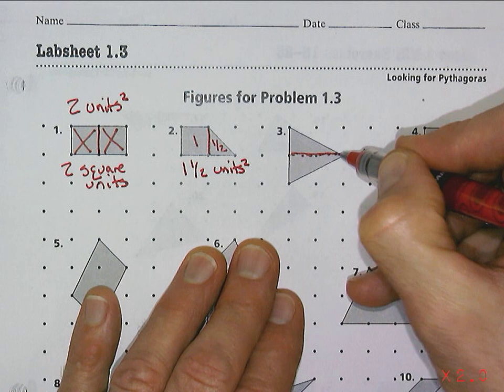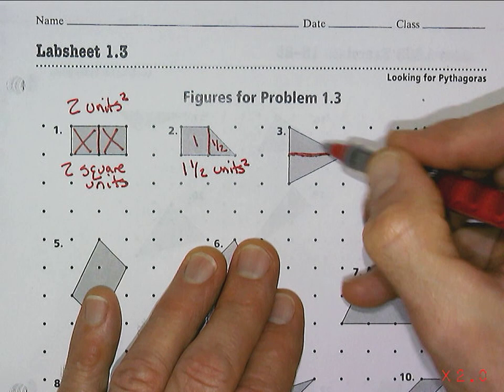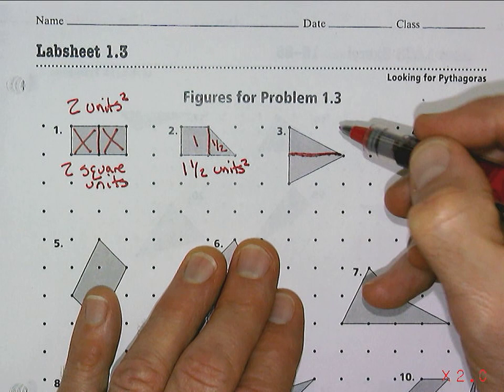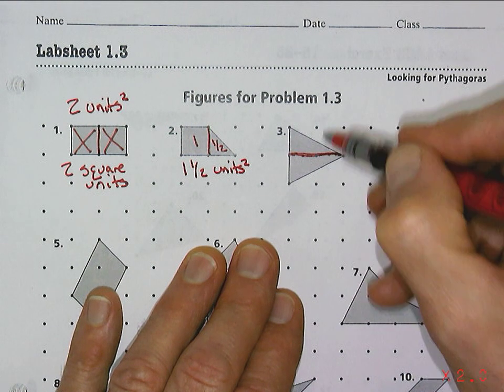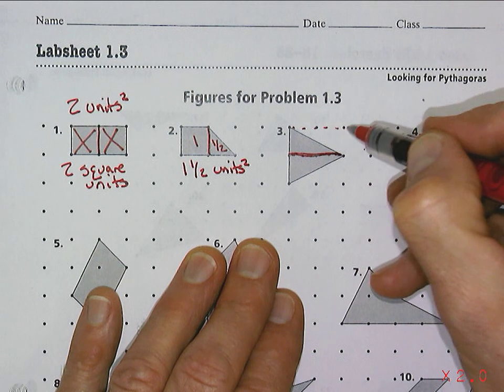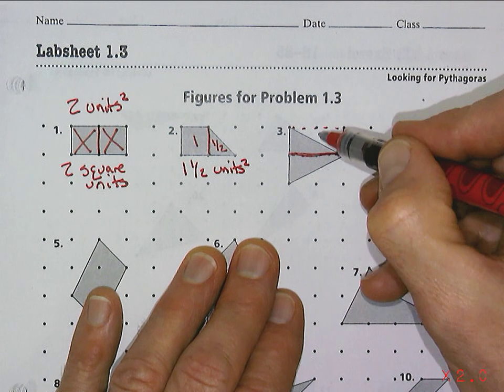It's really two triangles - this triangle and this triangle, and they're actually the same size triangles. I could take this triangle and put it right into that space right there.